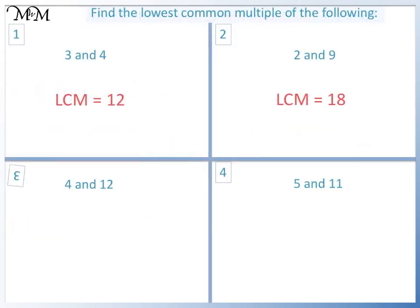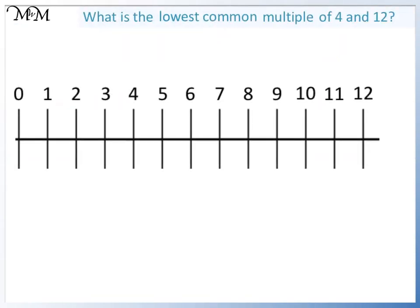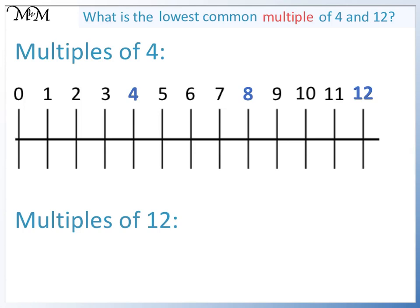Question 3. Multiples of 4 are 4, 8 and 12. 12 is the first multiple of 12. Since 4 is a factor of 12, 12 is the lowest common multiple.